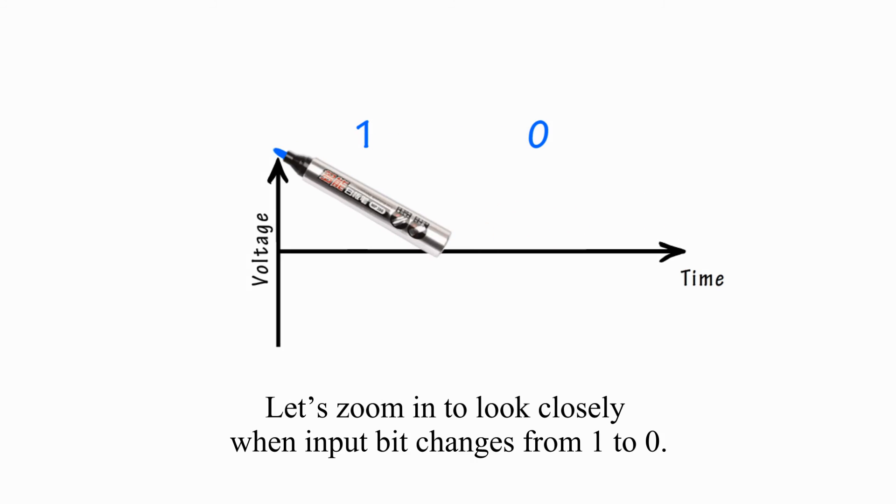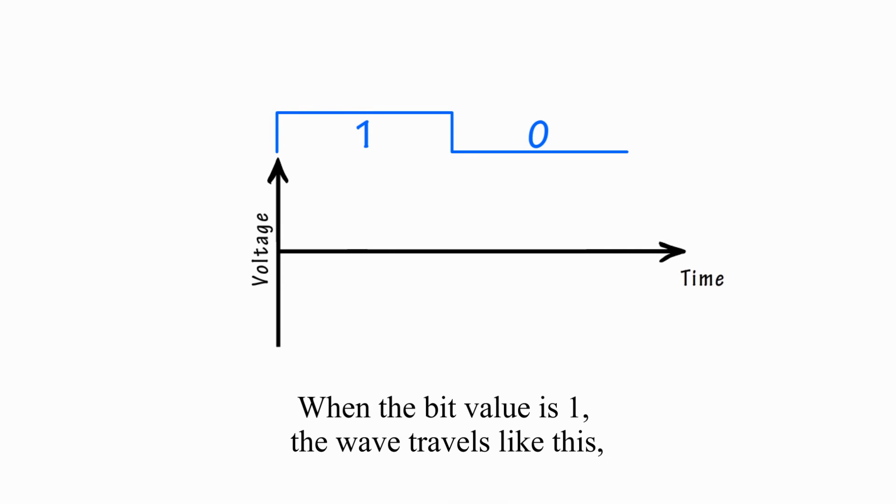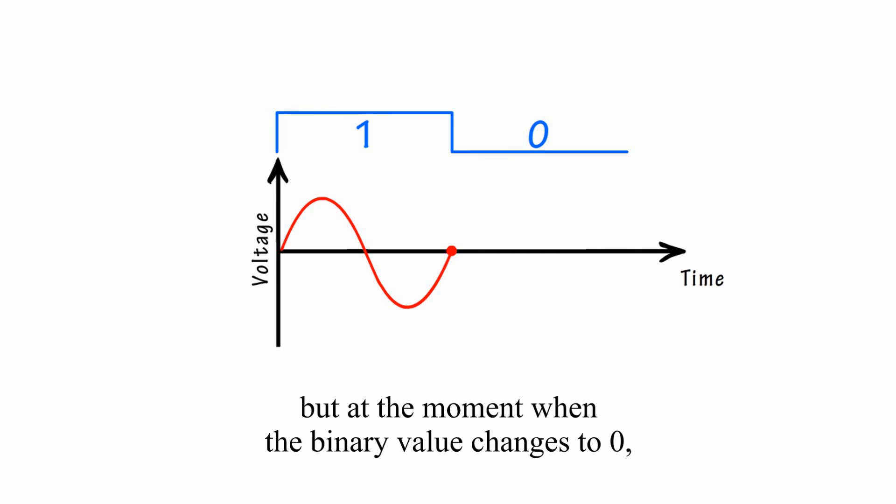Let's zoom in to look closely when input bit changes from 1 to 0, for example. When the bit value is 1, the wave travels like this.